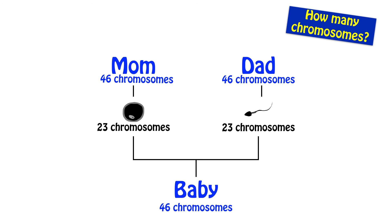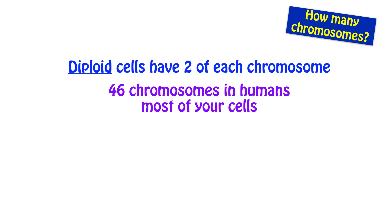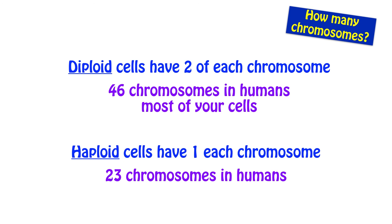There's some important vocabulary that comes with this. First, the diploid number. Diploid cells have got two of each chromosome. Now, in humans, that number is 46. Diploid cells have 46 chromosomes in humans. And this applies to most of your body cells. The word for cells that have half that number is haploid. Haploid cells have one of each chromosome. In humans, haploid cells have 23 chromosomes. And this applies to reproductive cells.